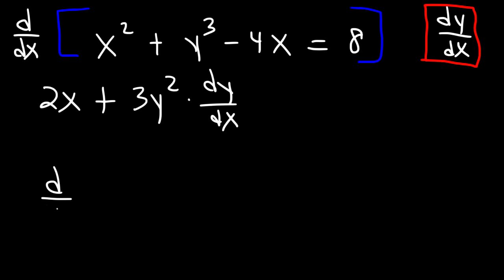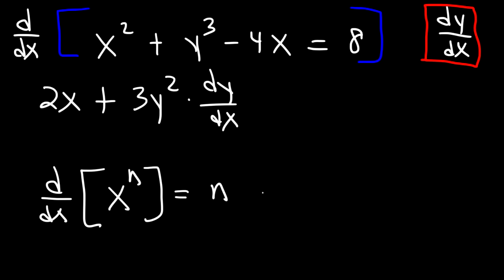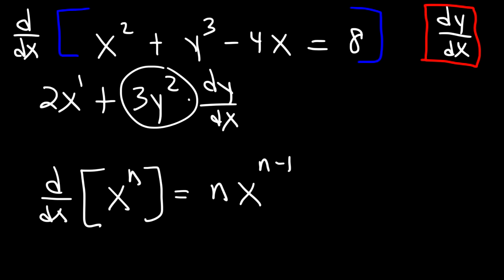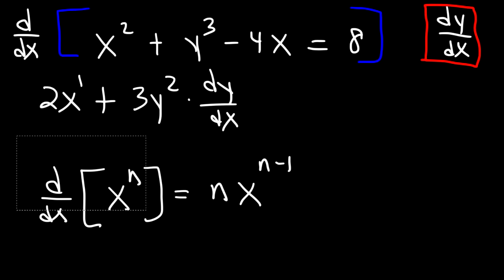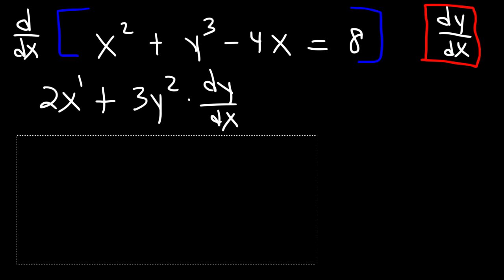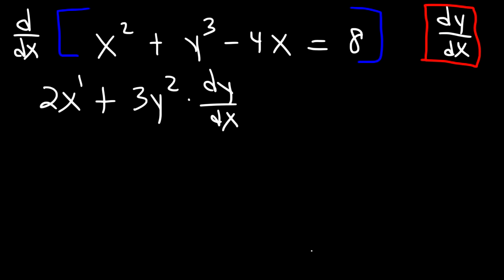For those of you who may have forgotten the power rule, it's the derivative of x to the n, where x is the variable and n is the constant — it's n times x raised to the n minus 1. So x squared becomes 2x to the first power. y cubed: n is 3, that becomes 3y squared. Now what about the derivative of negative 4x? The derivative of negative 4x is negative 4.